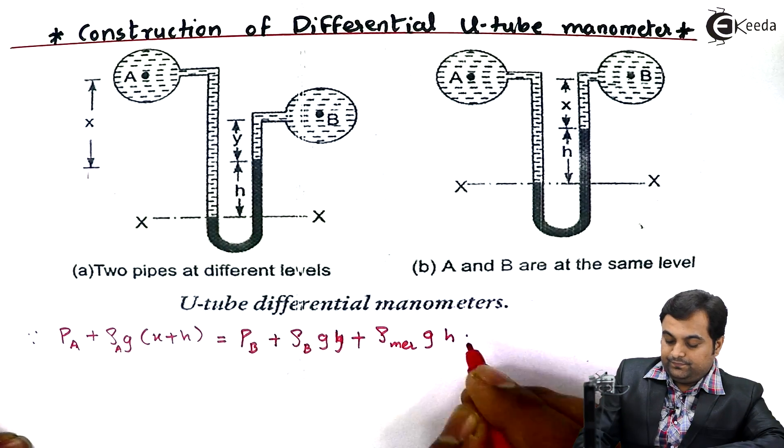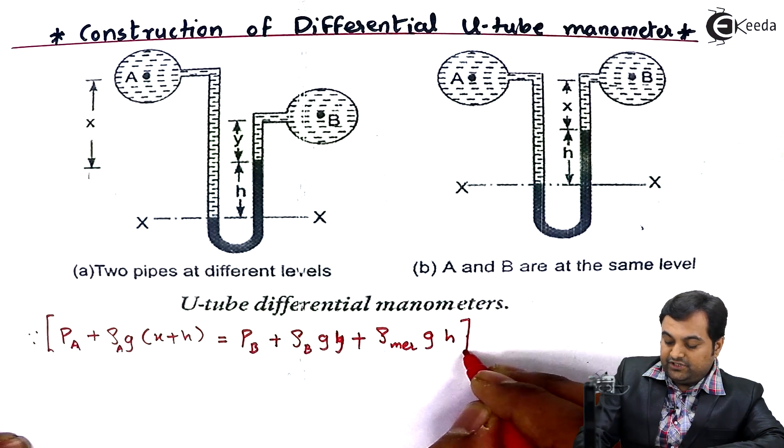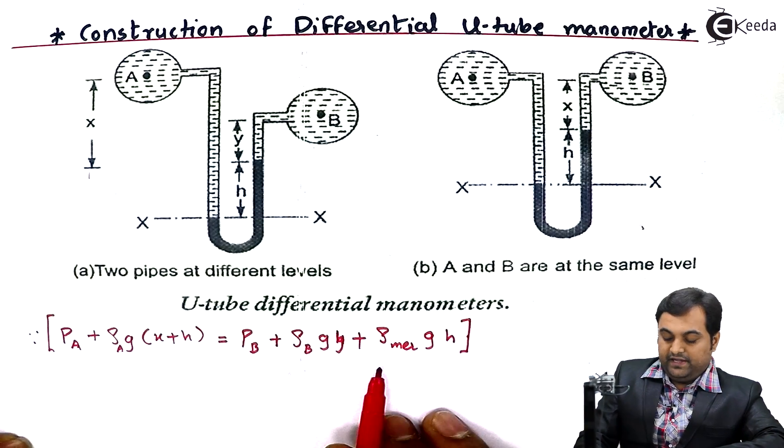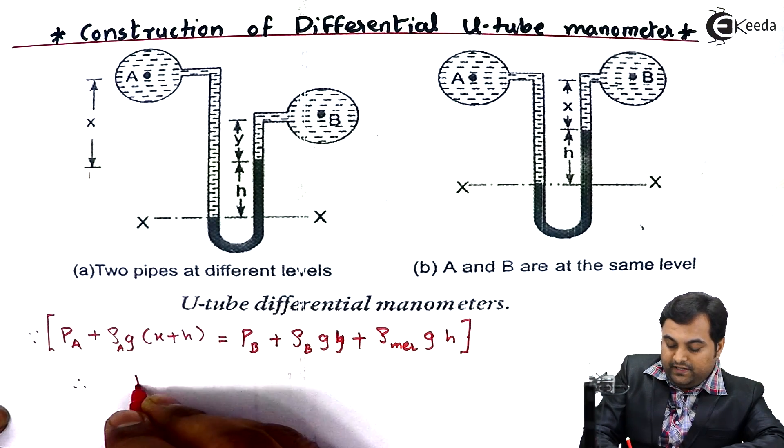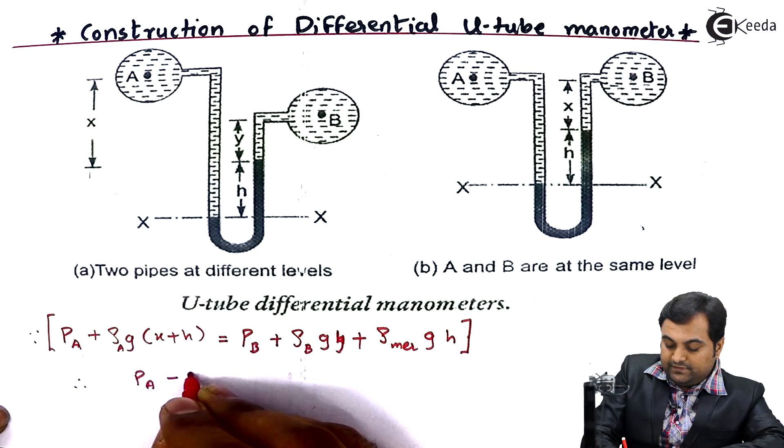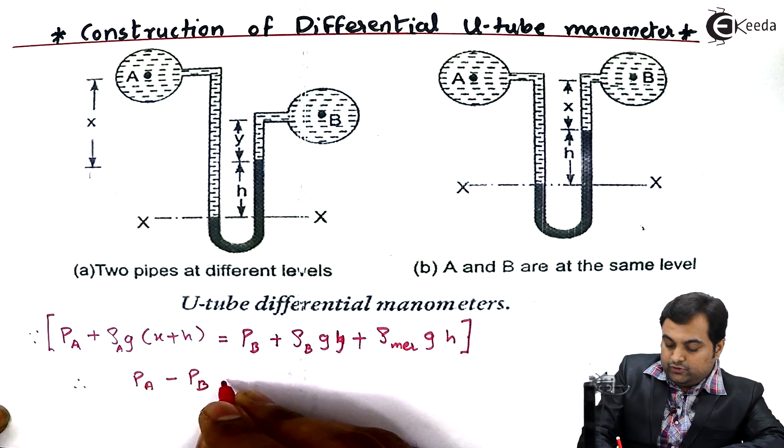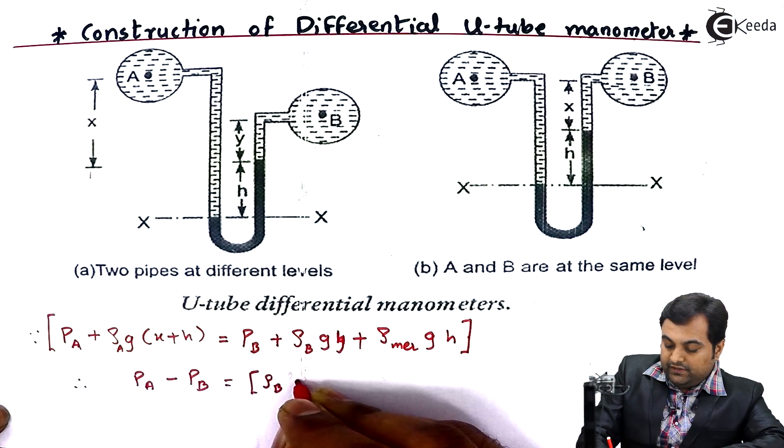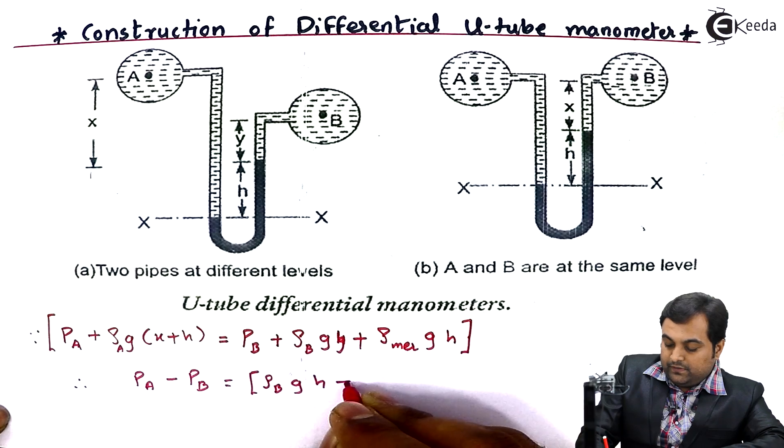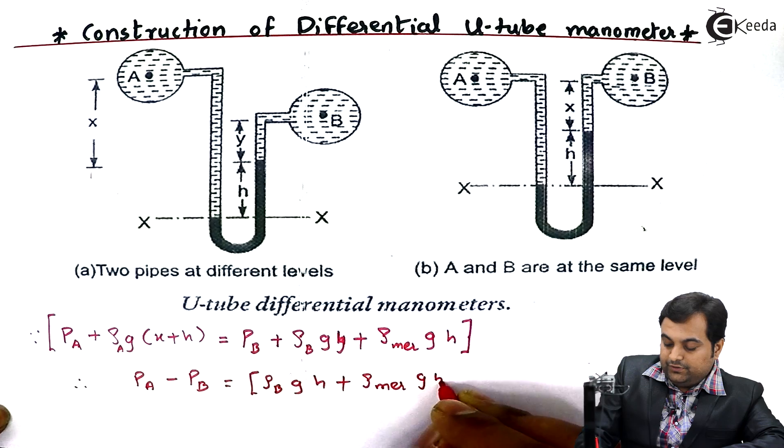Now here I have written the pressure equation for left limb and right limb. After that I would be taking the difference. Therefore, I'll keep P_A minus P_B. This P_B I'm shifting it onto the left side.